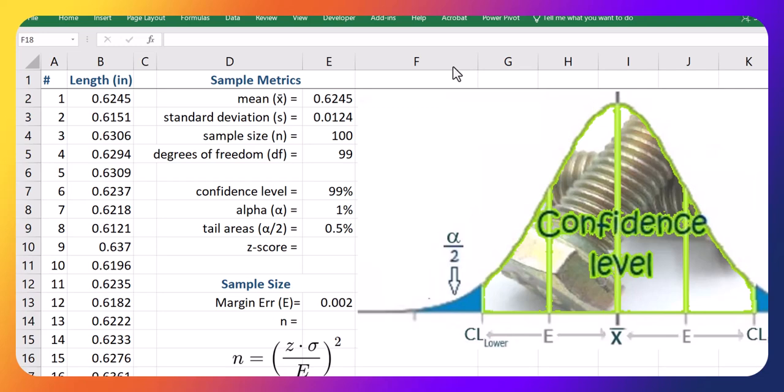In this video, we're going to look at the sample size required for confidence intervals to reduce the margin of error below a certain limit. In this example, we're going to have a limit of 0.002 for our margin of error. This example is related to hexagon head cap screws that are supposed to be 5 eighths inches in length.